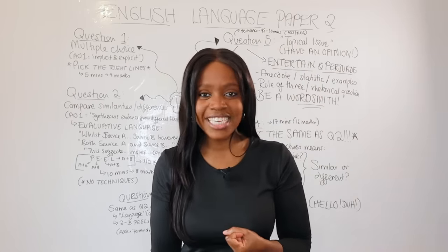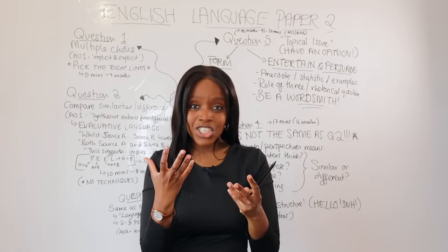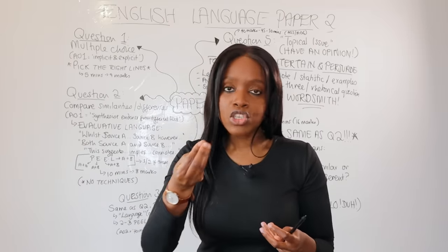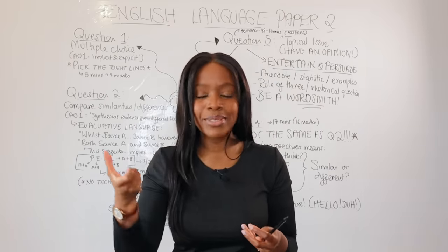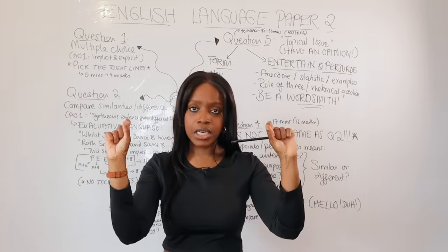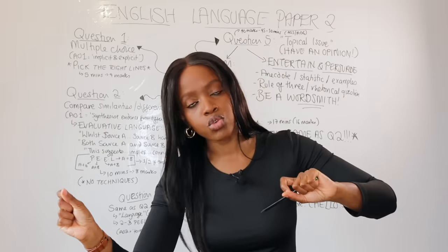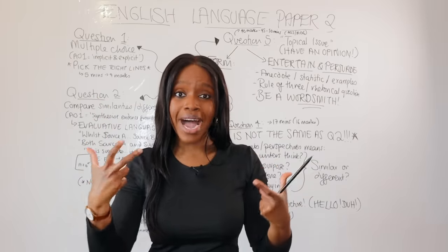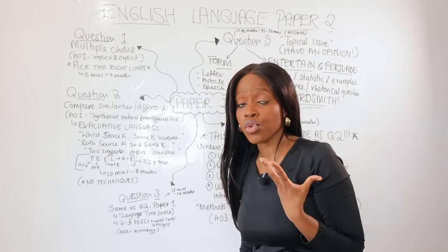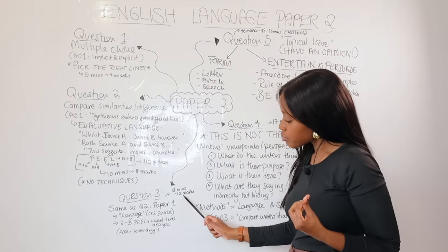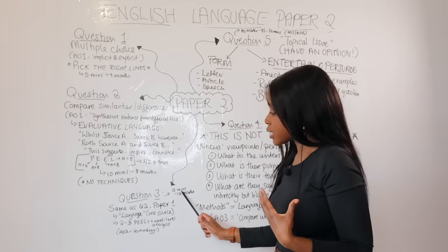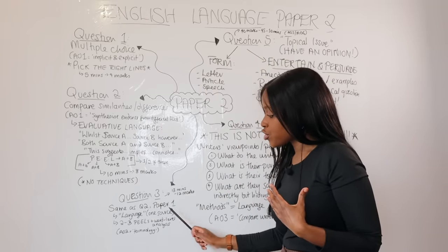Let's move on to question three. At this stage it should feel like home, because paper two question three tests exactly the same skills as question two of paper one. You're asked to look at one particular source — either source A or source B — at specific line numbers, and talk about how the writer uses language to convey something. You're only talking about one source. This question is worth 12 marks — aim to write at least three PEEL paragraphs in around 13 minutes.